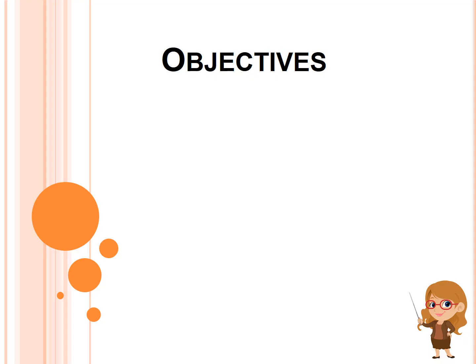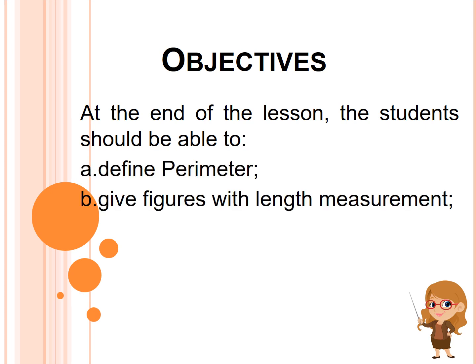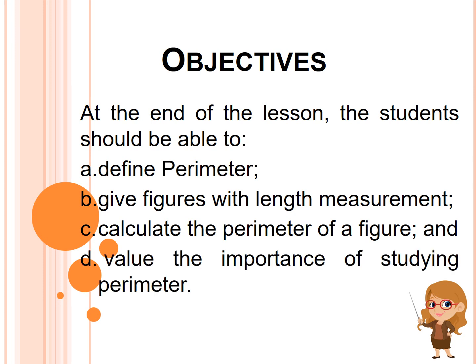The objectives of our lesson are, at the end of the lesson, the student should be able to A. Define perimeter. B. Give figures with length measurement. C. Calculate the perimeter of a figure. And D. Value the importance of studying perimeter.